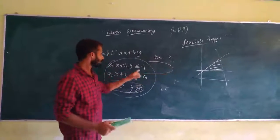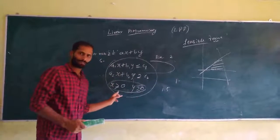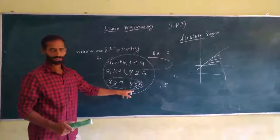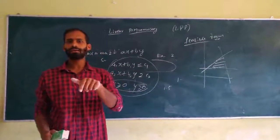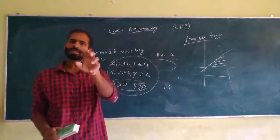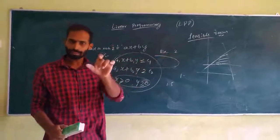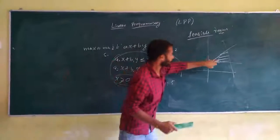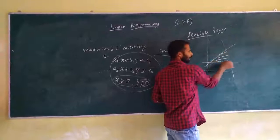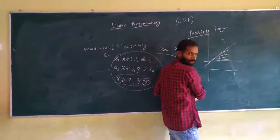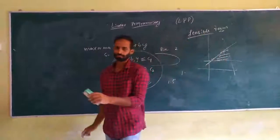The common region determined by all the constraints, including the non-negative constraints, is called the feasible region. Points within and on the boundary of the feasible region are called feasible solutions.